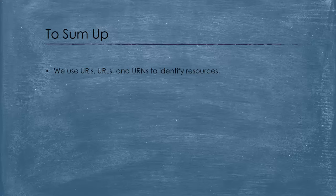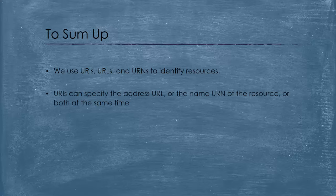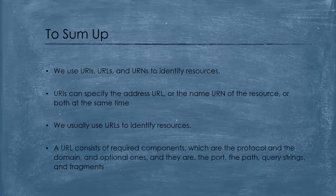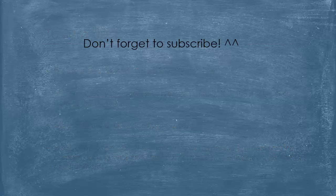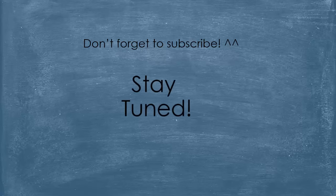To sum up: we use URIs, URLs, or URNs to identify resources. URIs can specify the address or the name of the resource, or both at the same time. We usually use URLs to identify resources, and a URL consists of required components — the protocol and the domain — and optional ones: the port, the path, query strings, and fragments. So there you have it — no headaches anymore. I hope you found this video useful. Till the next video, keep learning and stay tuned.